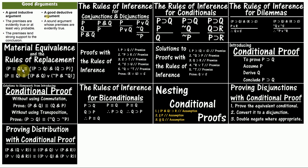Then we looked at the rules of replacement, and we initially looked at all of them in one video. These are rules for replacing part of an expression with another expression that has the same truth value. And then we started to do proofs. The reason we do proofs is because our simple argument forms do not cover all the possible valid argument forms that we could deal with. If we tried to use truth tables to demonstrate all the valid argument forms, it could get unwieldy. But proofs are a more compact, simpler method for proving the validity of any valid argument.